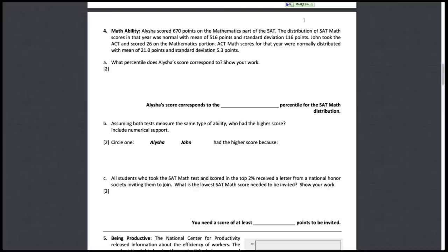Page three of the winter 2012 exam one, looking at math ability. Alicia scored 670 points on the math part of the SAT. Those particular scores look like they followed a normal model with a mean, she's above the mean, and a standard deviation given here too.